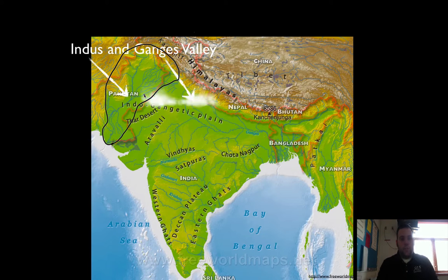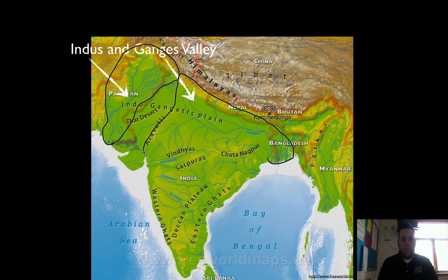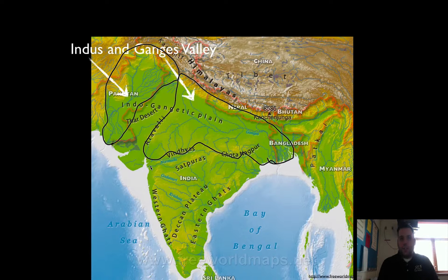Next, we're going to have the Ganges river valley. You can see it right here — it goes into modern day Bangladesh. It's all these tributaries and main rivers that flow into it, making it a very large area. You'll notice that in between the two rivers there's a desert. So wherever there's not water in India and Pakistan, it's desert. That's really going to influence where people live and what is developed and how it's developed.